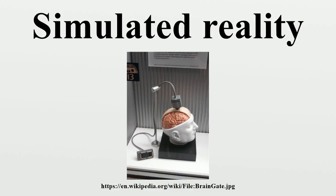Arguments: The simulation hypothesis was first published by Hans Moravec. Later, the philosopher Nick Bostrom developed an expanded argument examining the probability of our reality being a simulacrum. His argument states that at least one of the following statements is very likely to be true: 1. Human civilization is unlikely to reach a level of technological maturity capable of producing simulated realities, or such simulations are physically impossible to construct. 2. A comparable civilization reaching aforementioned technological status will likely not produce a significant number of simulated realities for any of a number of reasons.